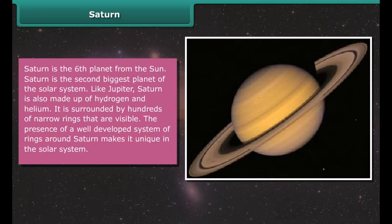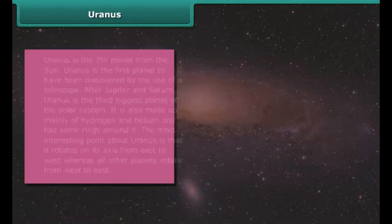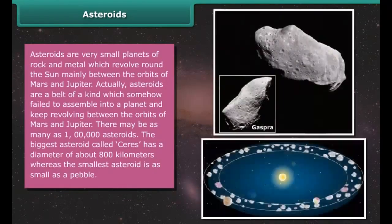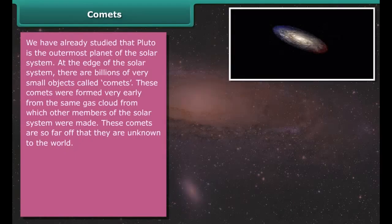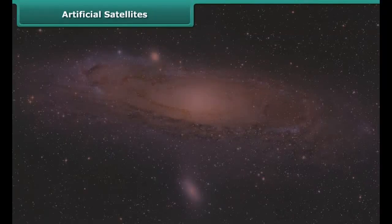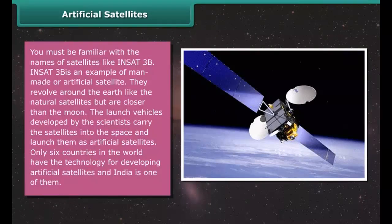The Earth is the third planet from the Sun. When viewed from space, the Earth appears blue and green due to the reflection of light from water and land on its surface. Earth is the only planet in our solar system which has sufficient oxygen and is also the only planet to have large quantities of water. Earth rotates about an imaginary axis through the north and south poles; this axis is slightly tilted. Day and night occur due to this rotation, and the Earth completes its journey around the Sun in 365 days, which we call a year.